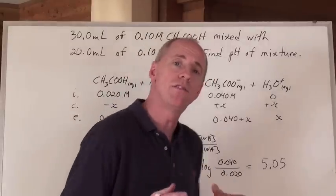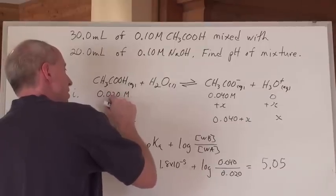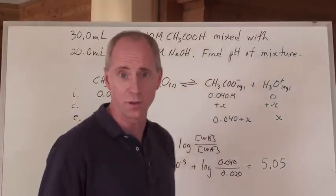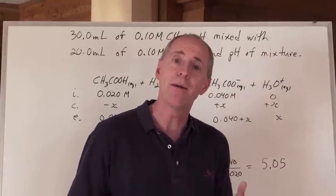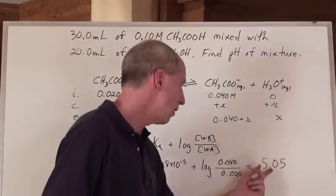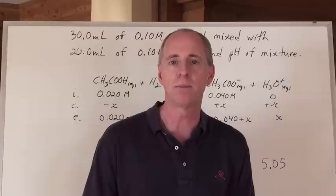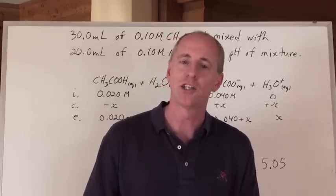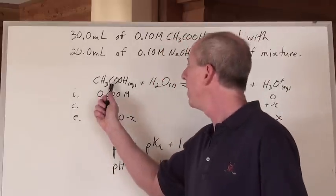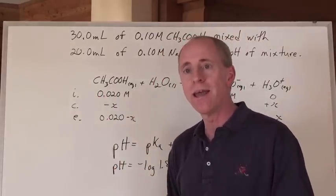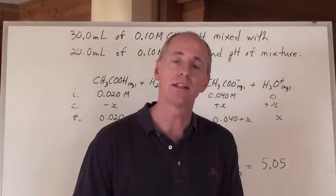By the way, if you had just stopped at calculating the excess concentration of acetic acid and taken the pH of that alone, you'd get something in the 4s — and it's not accurate, because you have a base mixed into that solution, and that base raises the pH up to about 5.05. That is the pH of this system, which ends up being a buffer. When you recognize that you have an excess weak acid in solution and a presence of conjugate base ion, you need to do the pH calculation of the buffer.